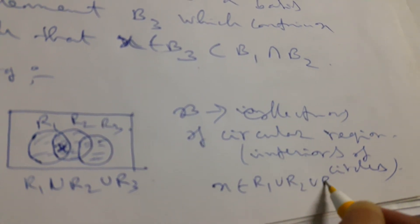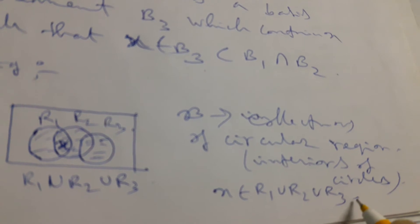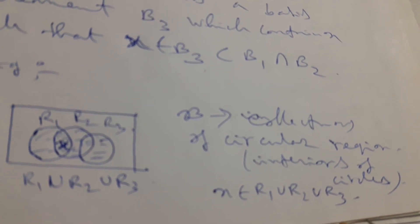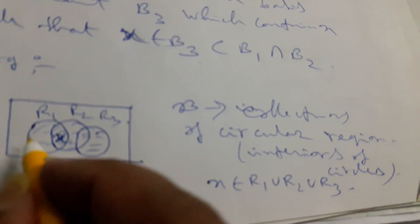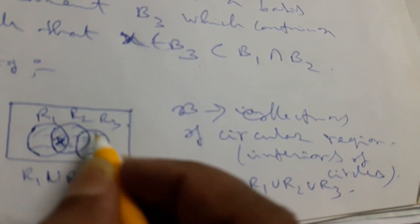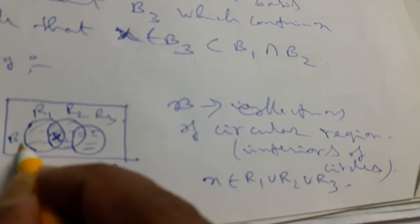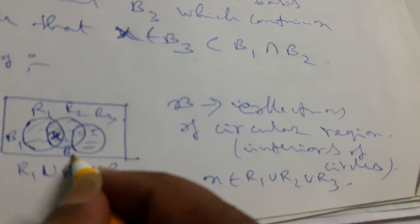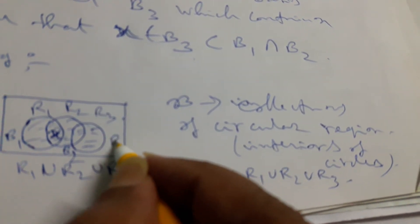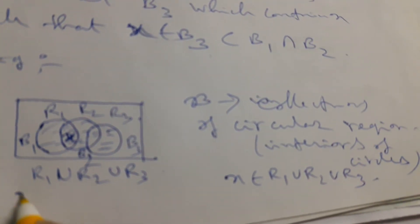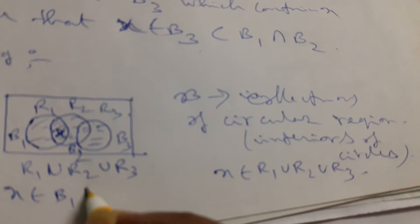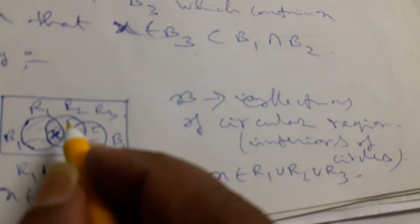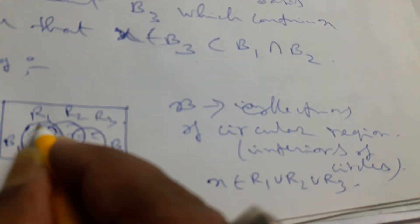There is a circular region containing it. And if X belongs to B1 intersection B2, where B1 and B2 are circular regions, then there exists a circular region.